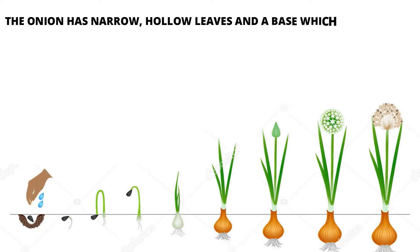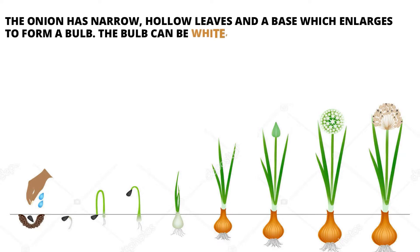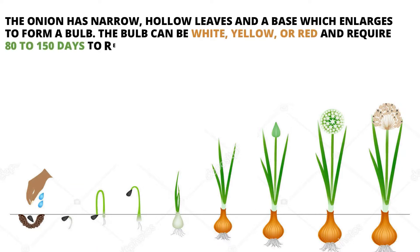The onion has narrow, hollow leaves and a base which enlarges to form a bulb. The bulb can be white, yellow, or red and requires 80 to 150 days to reach harvest.